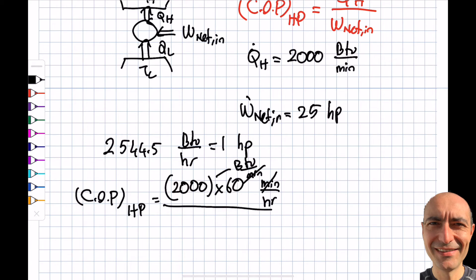Horsepowers cancel, and I get BTU per hour at both numerator and denominator. When I plug this into my calculator, I get 1.87. That is the coefficient of performance for the heat pump. That's part (a). When it says absorption rate from the surrounding air, it's asking about Q_L.